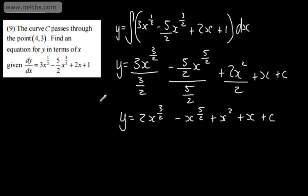So we've got sub in 4 and that will give us 3. So that's going to give us now 3 is equal to 2 lots of 4 to the power of 3 over 2, which is going to give me the square root, which is 2. 2 cubed is going to give me 8. Minus now 4 to the power of 5 over 2. So take the square root, which is 2, and then raise that to the fifth power, which is 32.